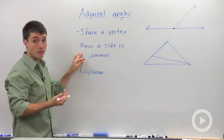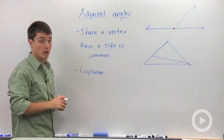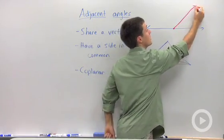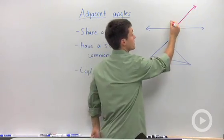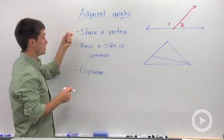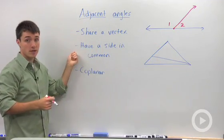They have a side in common, which sets them apart from vertical angles. So the side that these two angles share is that ray right there. I could say that angle one and two are adjacent because they share a vertex and they have a side in common.